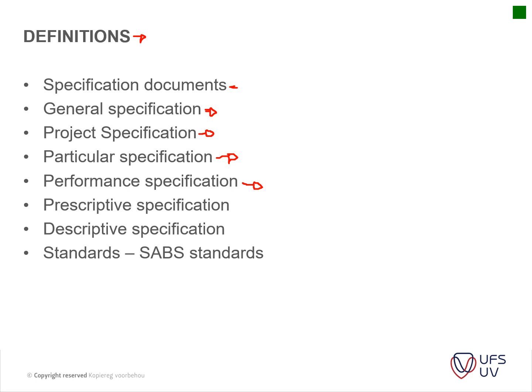Performance specifications also include target dates that should be met, quality requirements, and that when the project reaches practical completion it should be lockable, usable, fit for occupation and fit for purpose. Prescription specifications prescribe the contractor to work perhaps at night because during the day it's occupied by tenants who do not want to be disturbed, with specific prescriptions such as only a certain access gate may be used during construction.